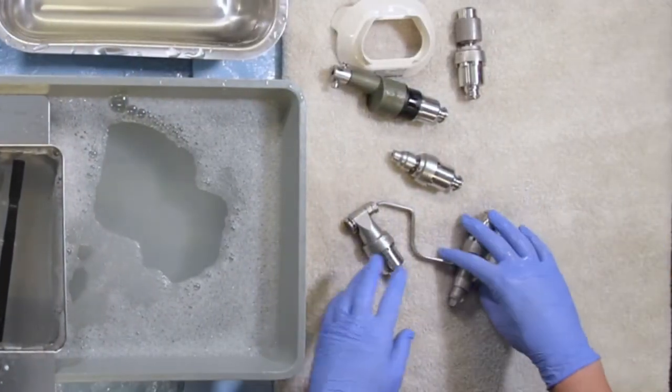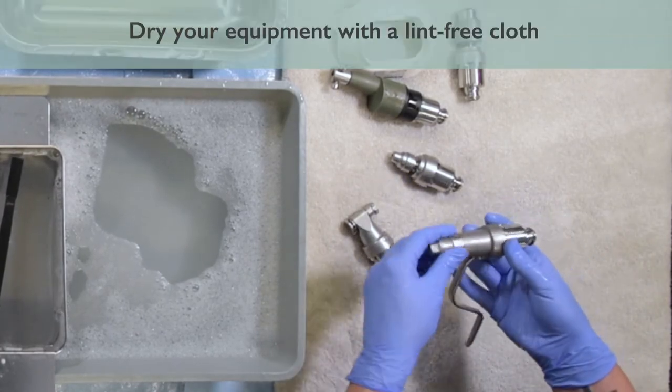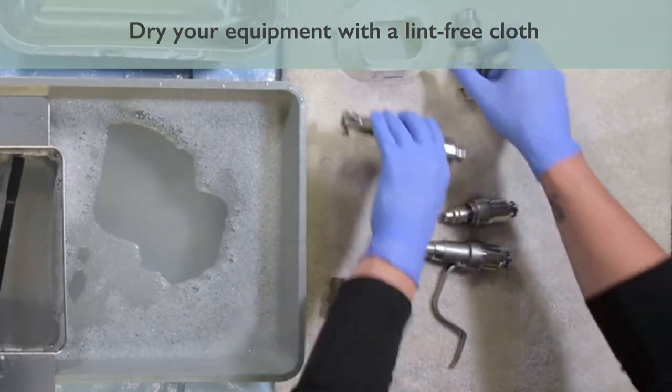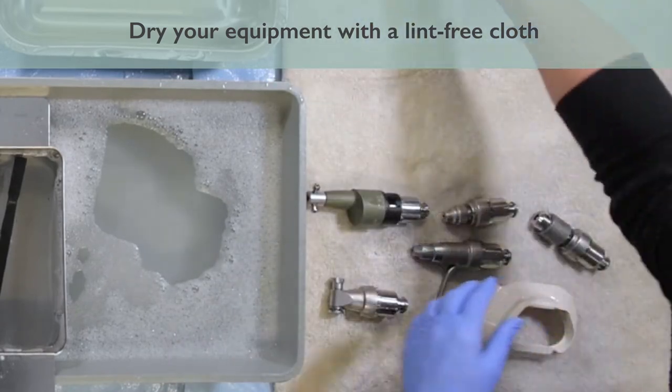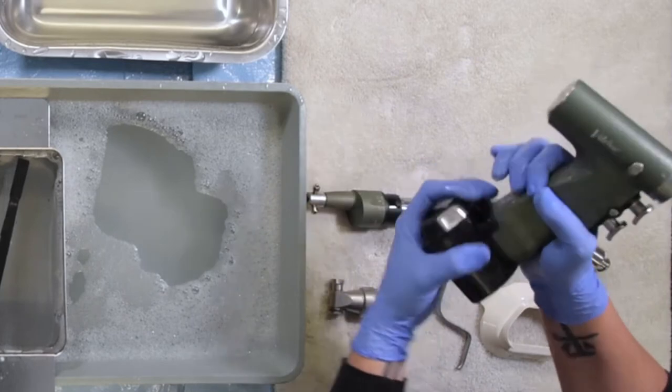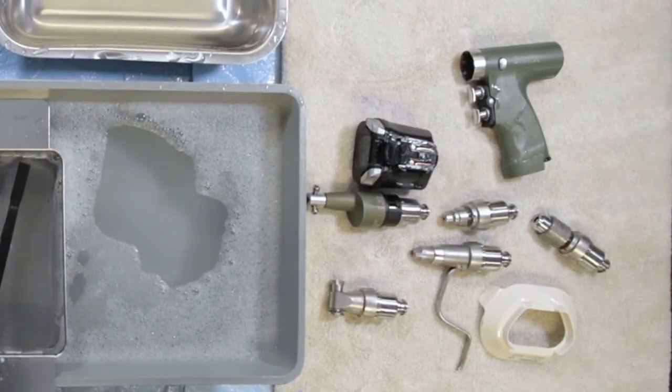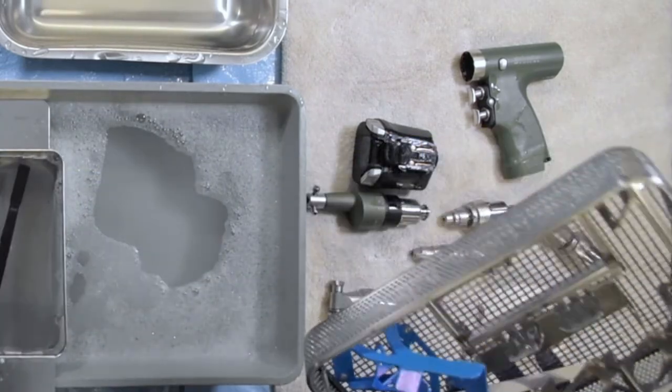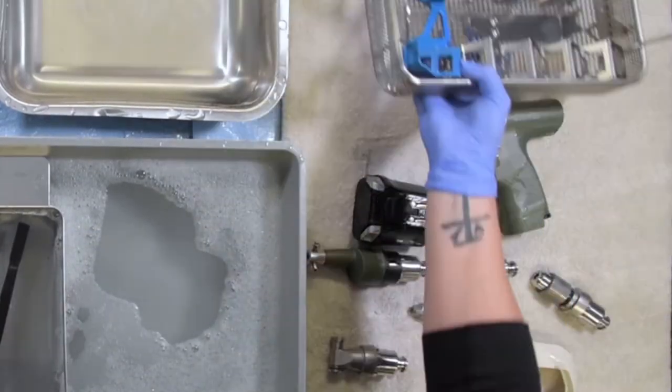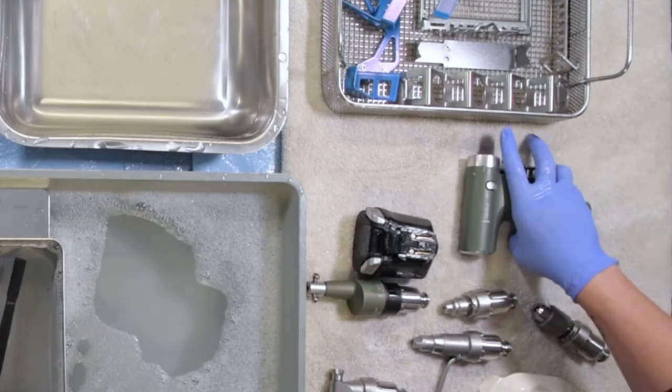Now it's time to dry our equipment and get it ready for sterilization using a lint-free cloth. If you haven't removed your housing already, you can go ahead and do so now. If you have a DeSoutter sterilization basket, go ahead and place this in front of you and get it ready to fill up.